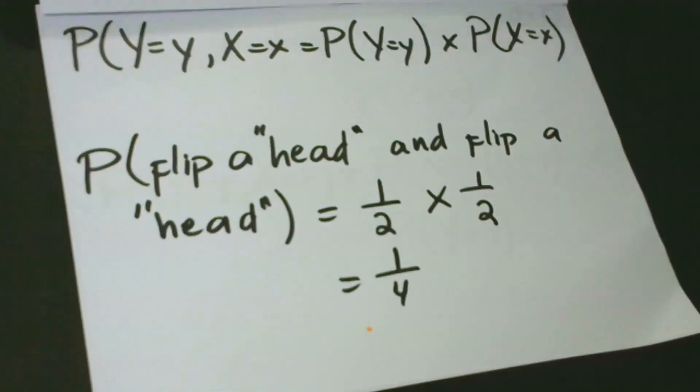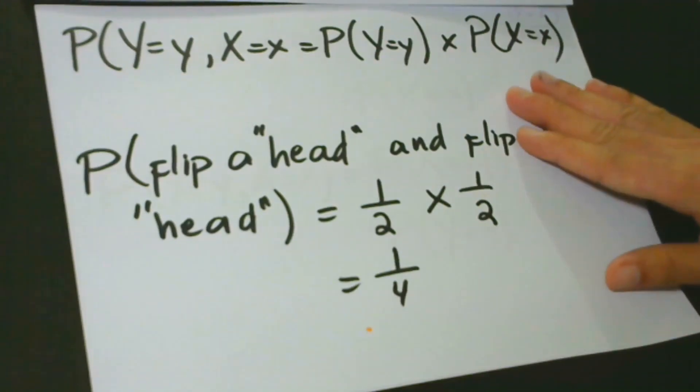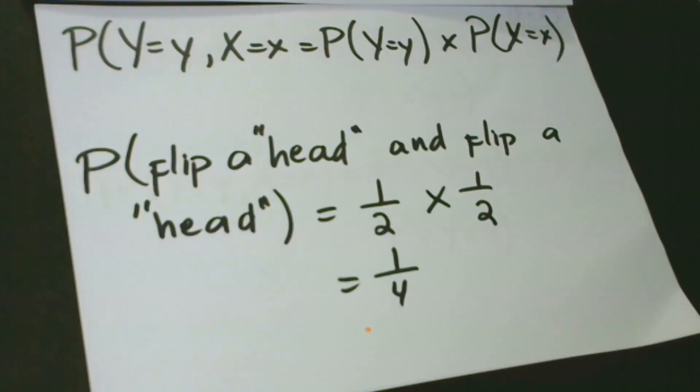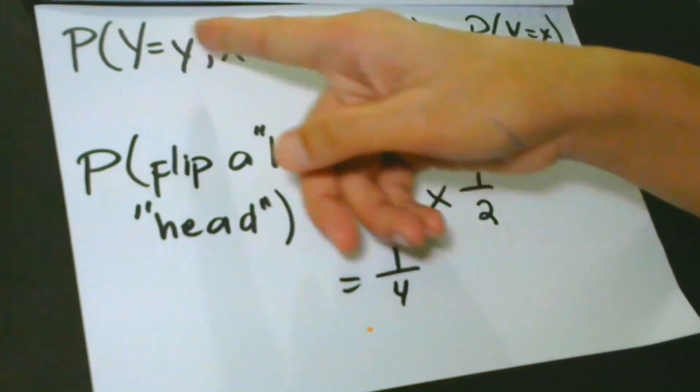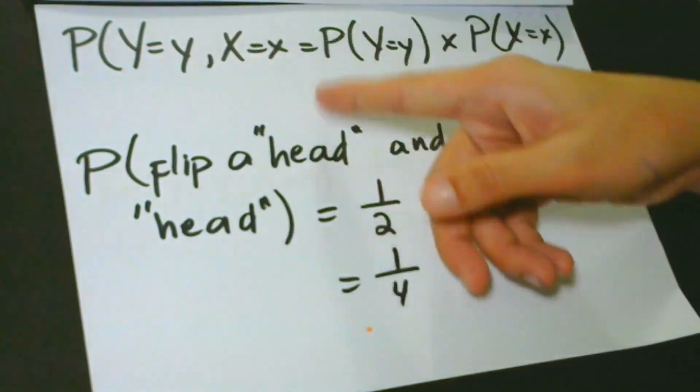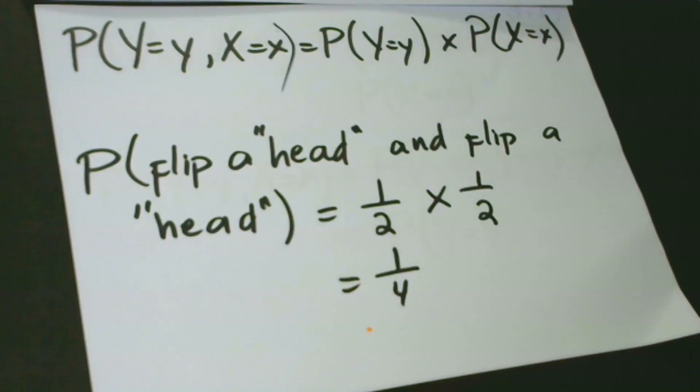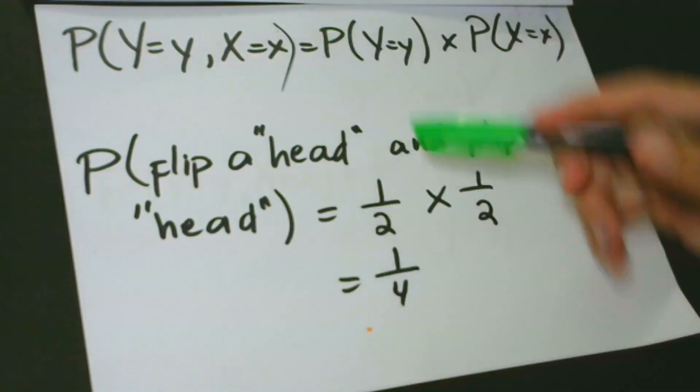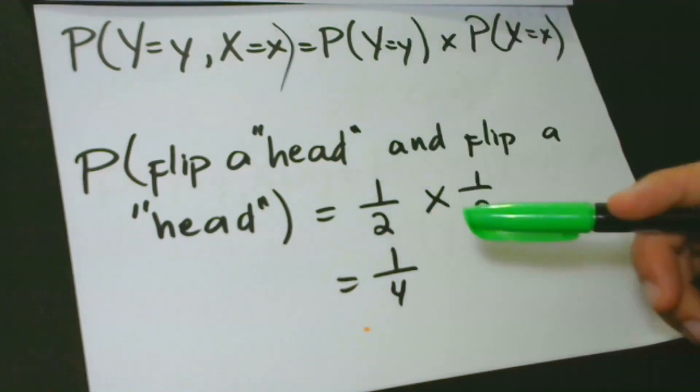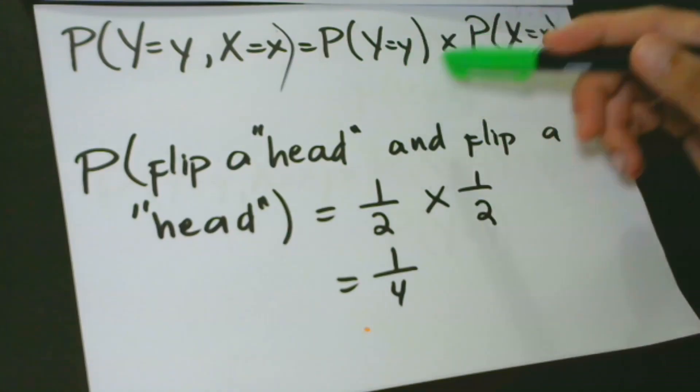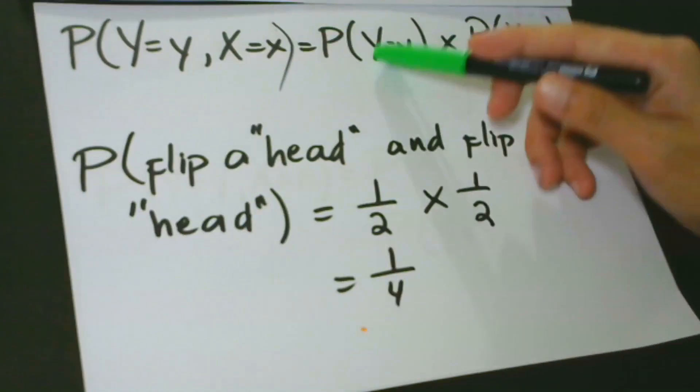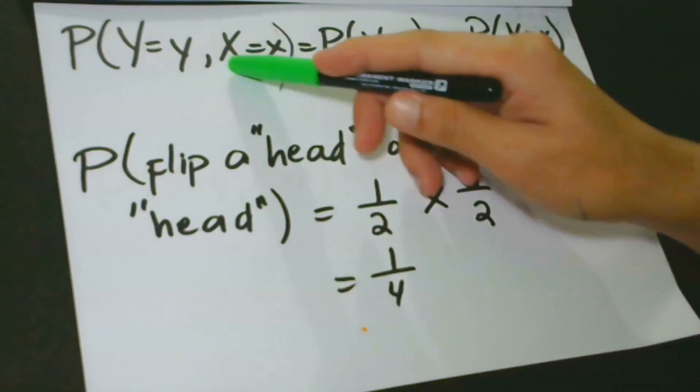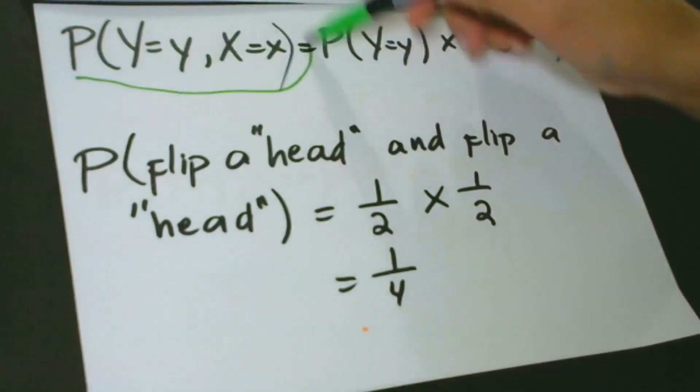Let's start with independent variables. The joint probability can be computed by multiplying the individual probabilities together. The probability of Y takes Y and X takes X equals the probability of Y that takes the value Y times the probability of X that takes the value of X. If we're going to multiply them, this value and then this value, this will give us the answer. Remember that this one is an independent variable.